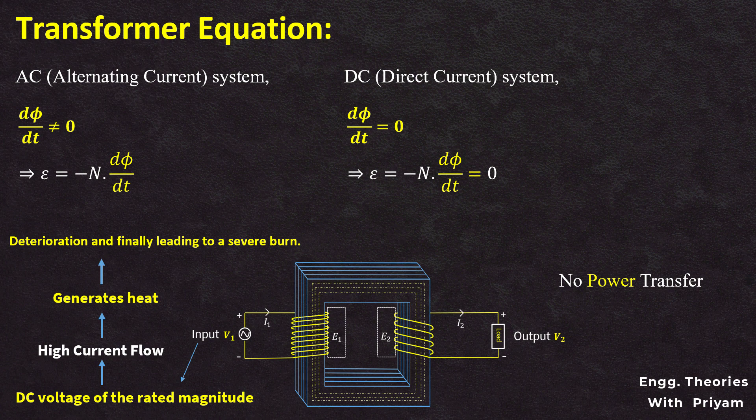There are some specialized transformers such as DC to DC converters that can convert DC voltage level, but they use different principle of operation such as switching or pulse width modulation and are not based on the principle of electromagnetic induction.